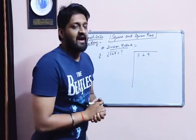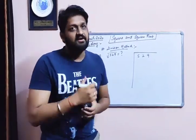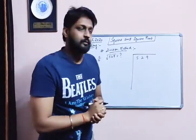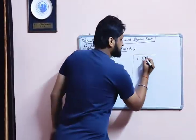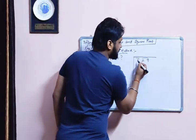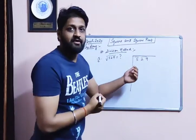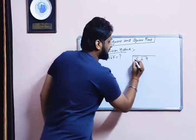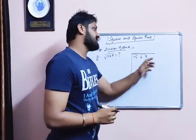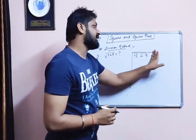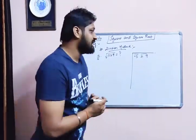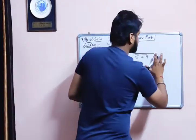First of all, we have to make the pairs from the right-hand side — pairs of 2. This is a pair of 2, and if we write here as 0, this is a pair of 2 and this is a pair of 2. We have to make the pairs from the right-hand side.